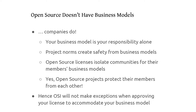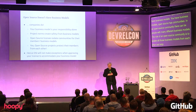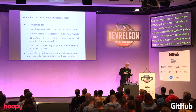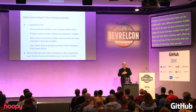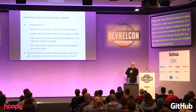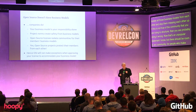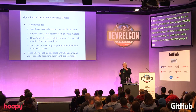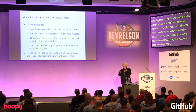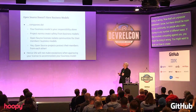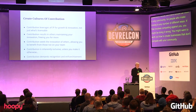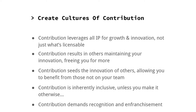Open source doesn't have business models — that was a popular meme in the first decade of open source. Open source has communities; you have business models. In an open source community there can be people with many different business models, and the role of the community is to isolate those business models from each other and stop them interfering with one another. There should be room in any community for people to make money in different ways, and if that involves competing against you, you might want to work out how to create businesses that don't compete with your community.